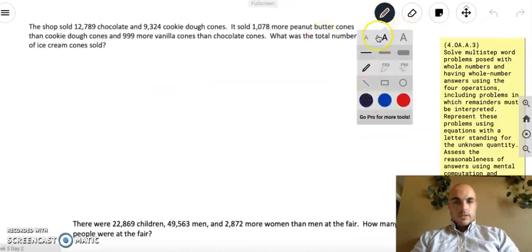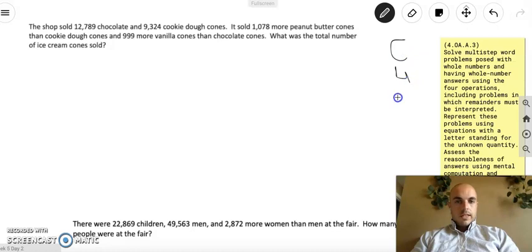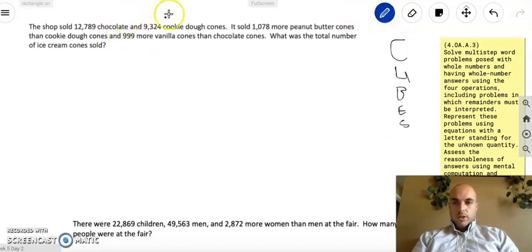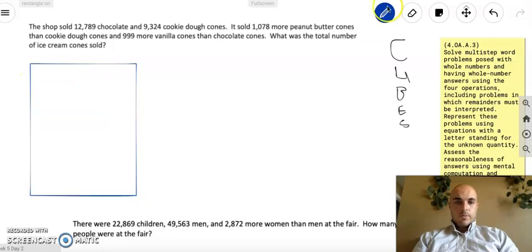So let's do this here. It's a cube on the side here. So the shop sold 12,789 chocolate and 9,324 cookie dough cones. This must be an ice cream shop. It sold 1,078 more peanut butter cones than cookie dough cones and 999 more vanilla cones than chocolate cones. Wow, we got a lot going on here. What was the total number of ice cream cones sold? Alright, I'm going to build a chart before I do anything else. And we have 1, 2, 3, 4 different kinds of cones. And it looks like we need to find a total.